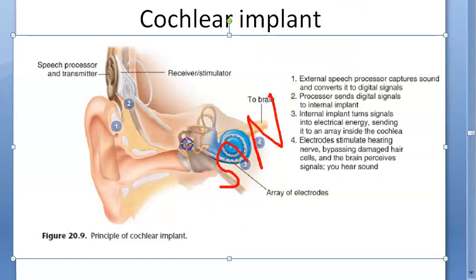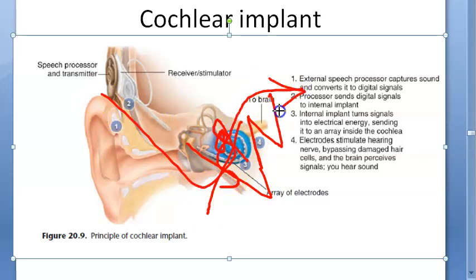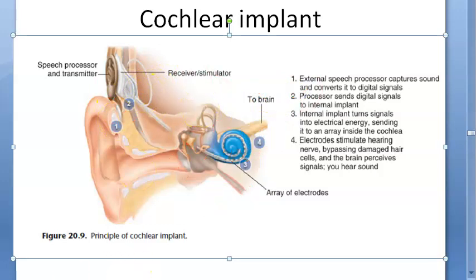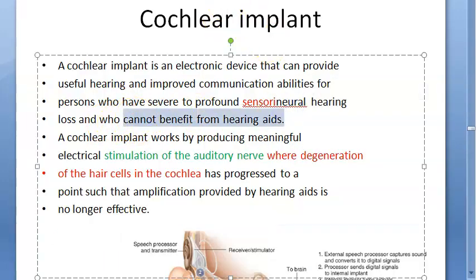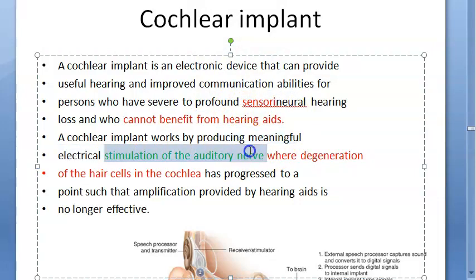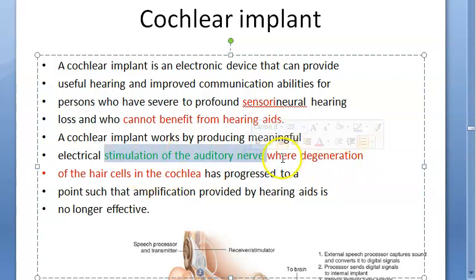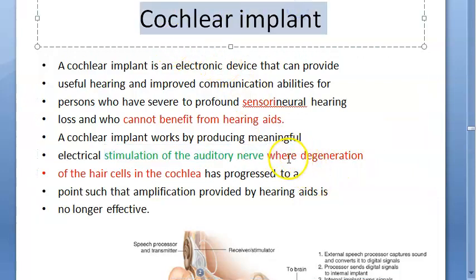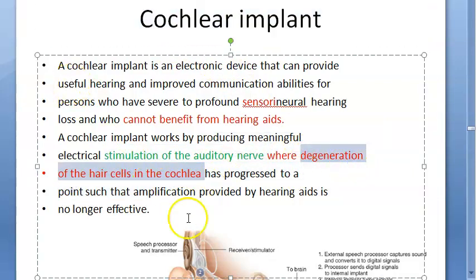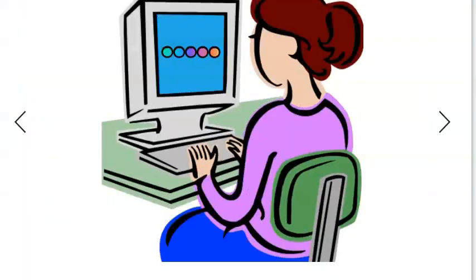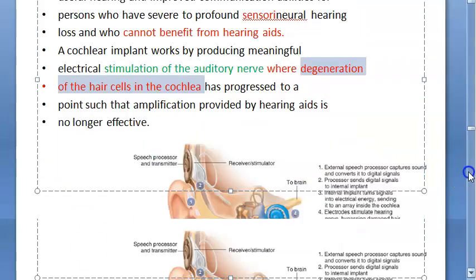If your sensory part of your inner ear is gone - that is, your hair cells are not proper - you can put a cochlear implant and it will directly transmit information to the nerve. So who are the people taking cochlear implants? They cannot benefit from normal hearing aids. They have profound sensory neural hearing loss. The cochlear implant will stimulate the auditory nerve where there is degeneration of hair cells in the cochlea.